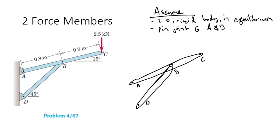If we were to not identify member DB as a two-force member and identify that there are pin joints at A and D, drawing a free-body diagram of this system, we would have four unknowns: the reactions at A in the X and Y and the reactions at D in the X and Y.